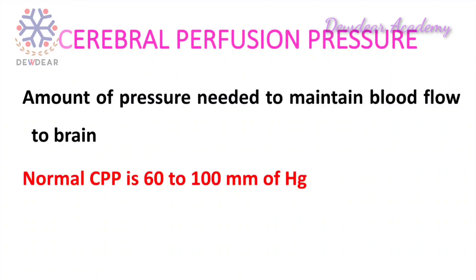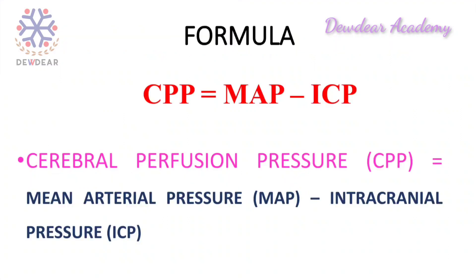Normal cerebral perfusion pressure is 60 to 100 millimeters of mercury. The formula to calculate CPP is: CPP = MAP minus ICP, where MAP is the mean arterial pressure and ICP is the intracranial pressure. CPP is regulated by two balanced opposing forces — MAP and ICP.